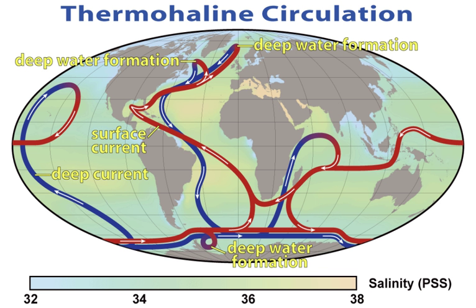Murray went on to found the academic discipline of oceanography at the University of Edinburgh, which remained the centre for oceanographic research well into the 20th century. Murray was the first to study marine trenches and in particular the Mid-Atlantic Ridge, and map the sedimentary deposits in the oceans. He tried to map out the world's ocean currents based on salinity and temperature observations, and was the first to correctly understand the nature of coral reef development.